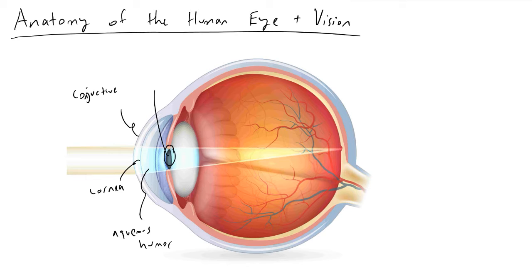The pupil is not really a thing — it's just an opening with a particular diameter. The diameter of your pupil is controlled by a muscle called your iris. The iris has a particular color like brown, green, or blue, and it will actually contract or dilate much like you see an aperture do on a camera or a compound microscope in order to let more or less light in.